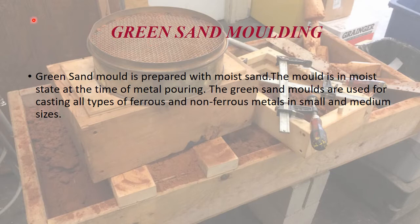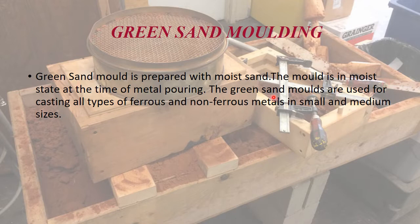Any additives may be added in small amounts to obtain the desired properties of the mold or casting. Nearly 60% of the total castings are prepared from green sand molds. In this method, the molten metal may be poured immediately after the mold is completed — that is, the mold is in a moist state at the time of metal pouring.